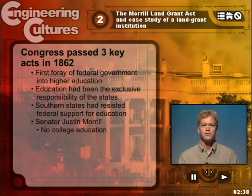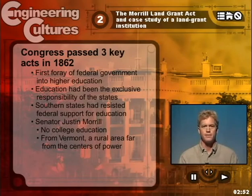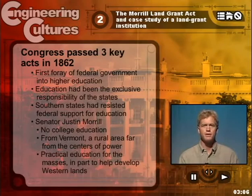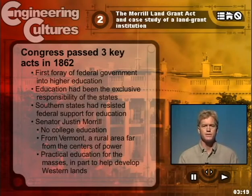Morrill himself had no college education. He came from Vermont, a rural state far away from the centers of power in Boston, New York, and Philadelphia. And yet in Congress he served for upwards of 45 years. He felt that there should be a system of practical education for the masses, in part to help develop western lands, but also to help develop rural areas in the United States, including Vermont. He was dissatisfied and expressed that there was widespread dissatisfaction with the colleges of this country, and the classical education taught in such colleges, because it basically reproduced an intellectual and social elite.